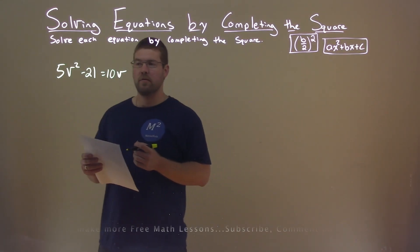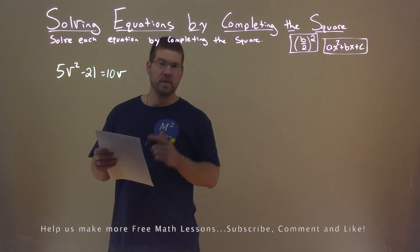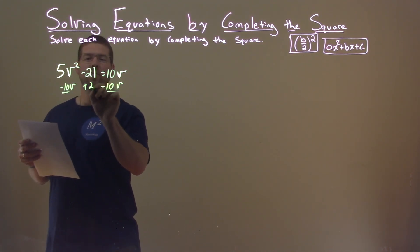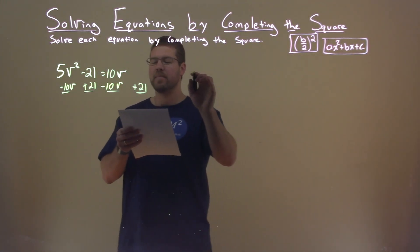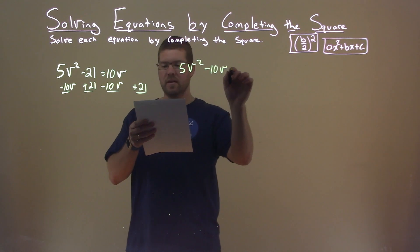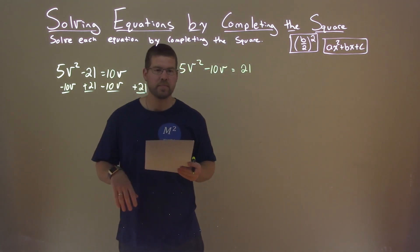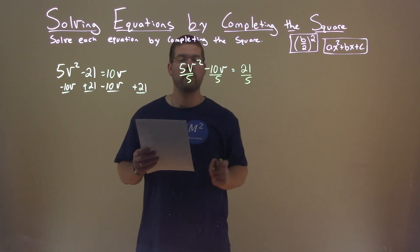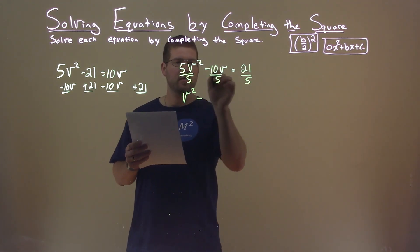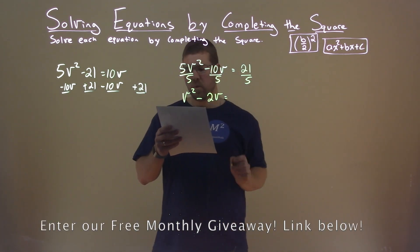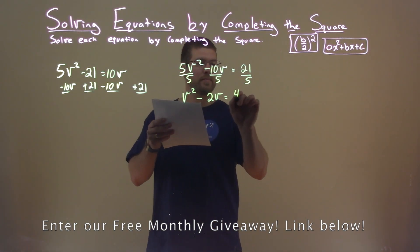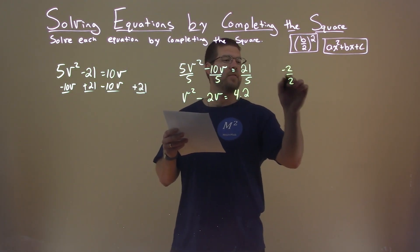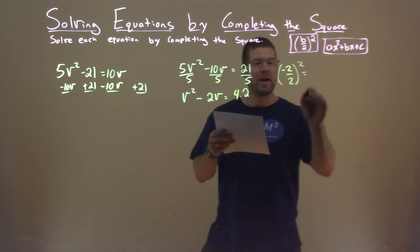We're given this problem right here: 5v squared minus 21 equals 10v, and we want to solve this by completing the square. I'm going to subtract 10v from both sides and add 21 to both sides: 5v squared minus 10v equals positive 21. I don't like having an A value that's more than 1, so I'm going to divide everything by 5 — that gives me v squared minus 2v equals 4.2. Now I take my B value, negative 2, divide it by 2, and square it — that comes out to be 1.